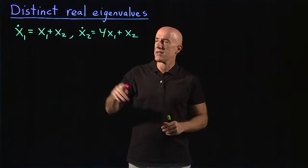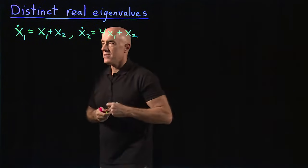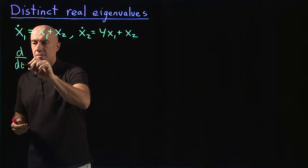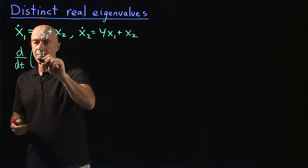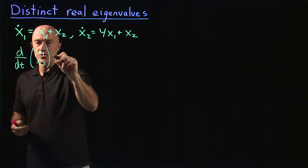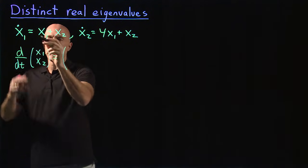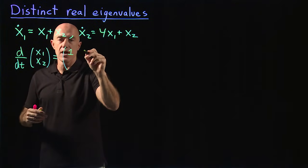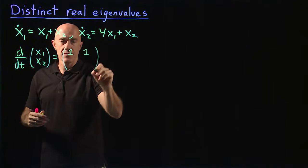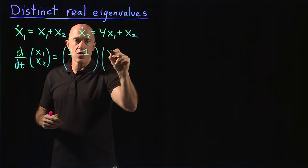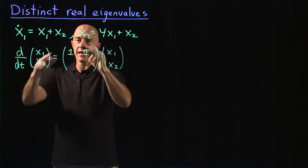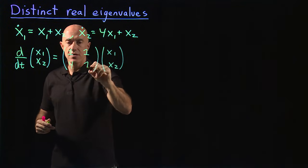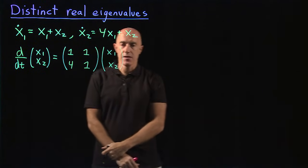So first let's write this system as a matrix equation. We have d/dt of the column vector x₁, x₂ is equal to the matrix. The first row of the matrix is the first equation, so 1, 1, x₁, x₂. And the second row of the matrix is the second equation, so 4, 1.